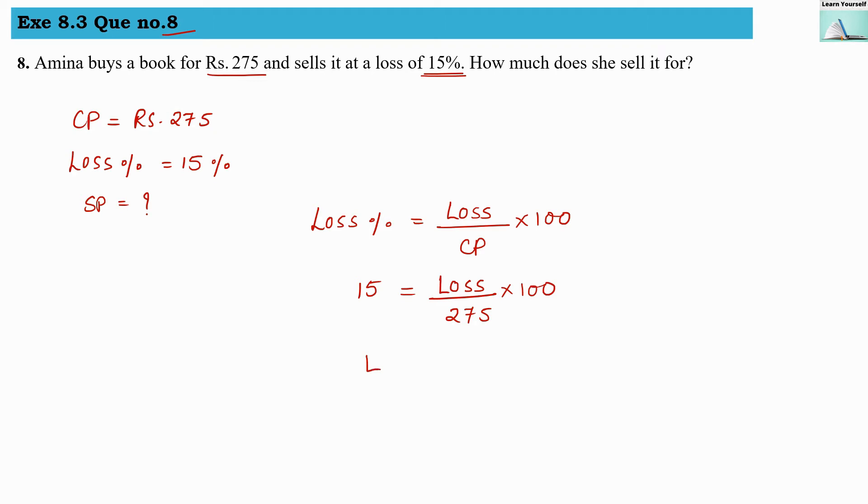Loss will be equal to 15 into 275, divided by 100. So 4125 divided by 100, we get here 41.25 will be the loss for this transaction.